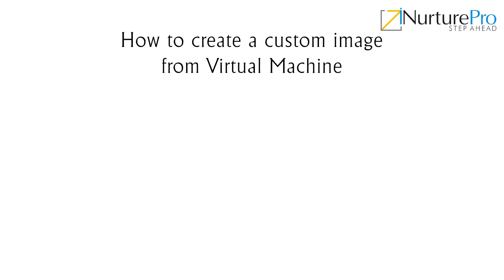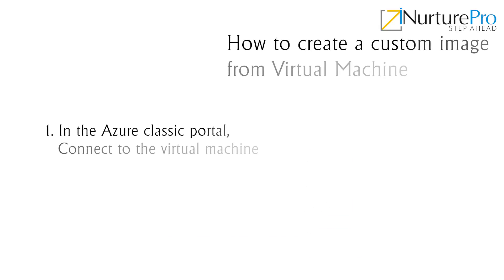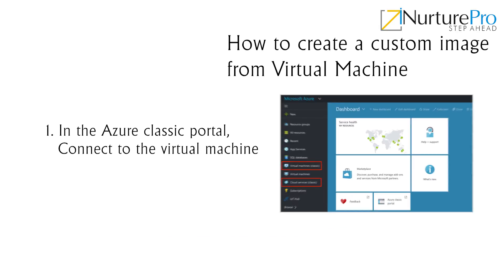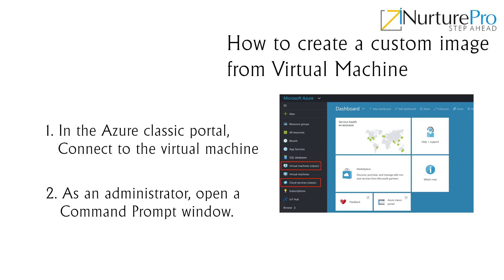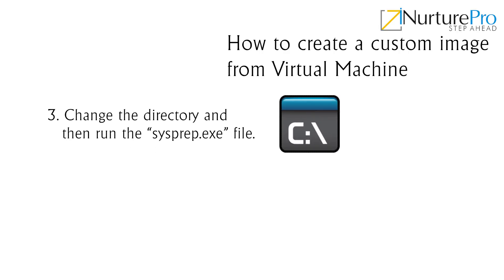Now let us learn how to create a custom image from a virtual machine. In the Azure classic portal, connect to the virtual machine. As an administrator, open a command prompt window. Change the directory and then run the sysprep.exe file.